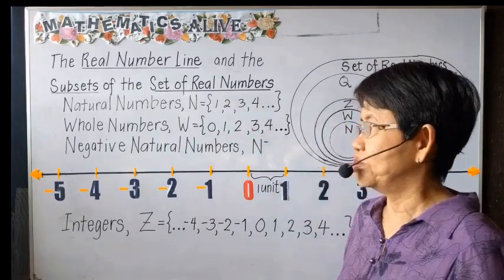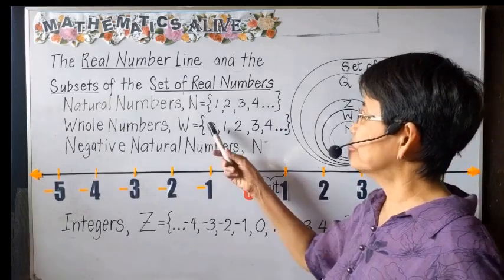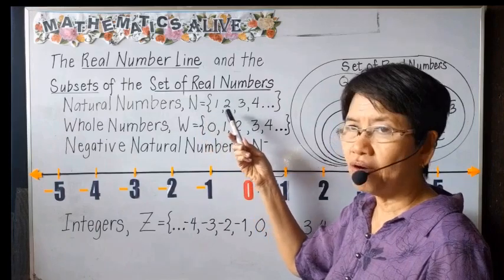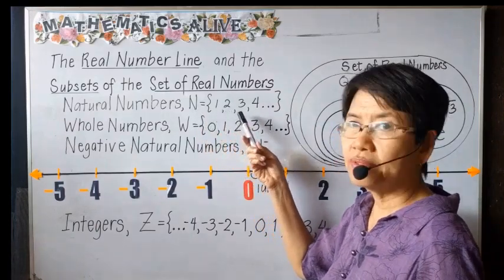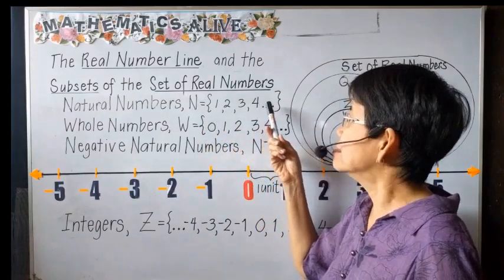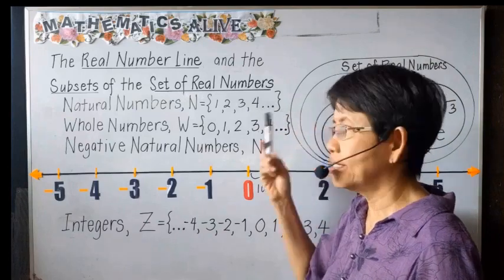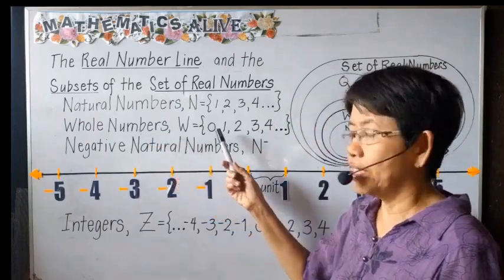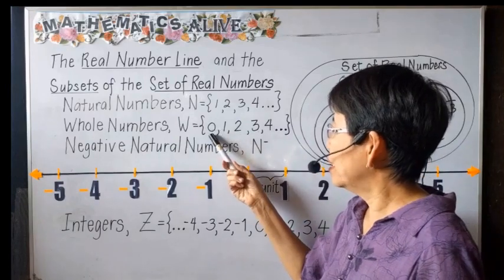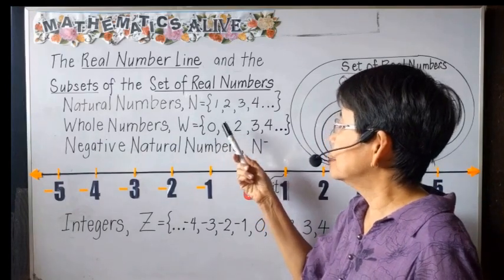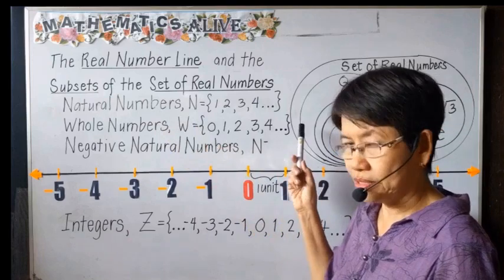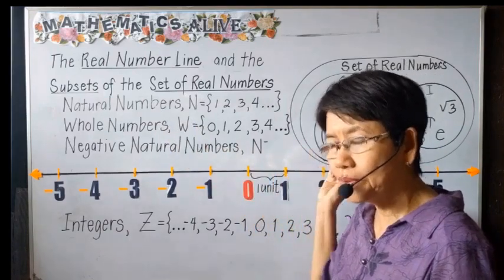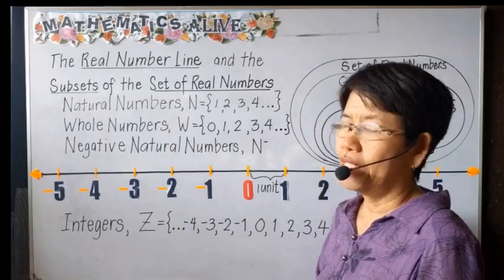The subsets of the set of real numbers are as follows. The set of natural numbers, set N, is composed of 1, 2, 3, 4, and so on up to infinity. The set of whole numbers begins with zero and then adds the set of natural numbers, so we have 0, 1, 2, 3, 4, 5, up to infinity.